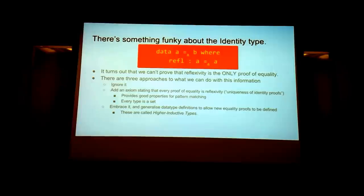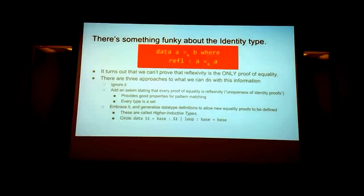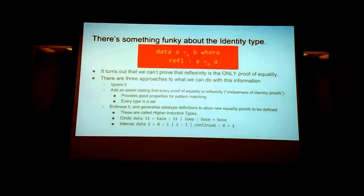We can embrace this fact and generalise data type definitions to allow new equality proofs to be defined. These are called higher inductive types. For example, the circle — in pseudopascal notation, there's a base point of type S1, which is like a normal constructor. And what higher inductive types bring is the loop constructor of type base equals base. Note that this is by definition not equal to reflexivity. Another example is the interval, with 0 and 1, and then 0 equals 1.